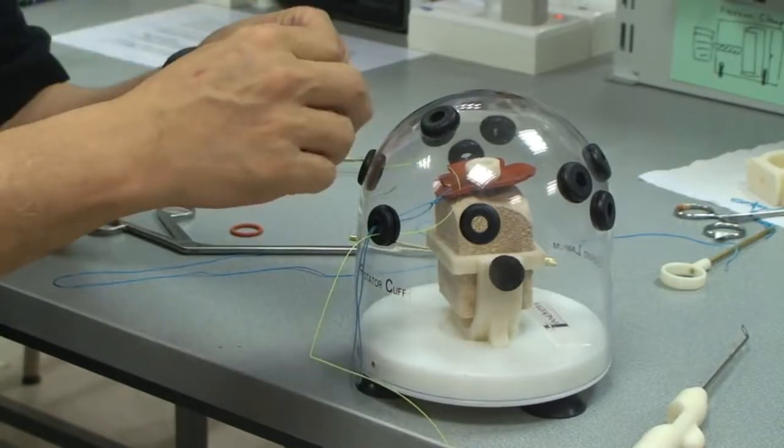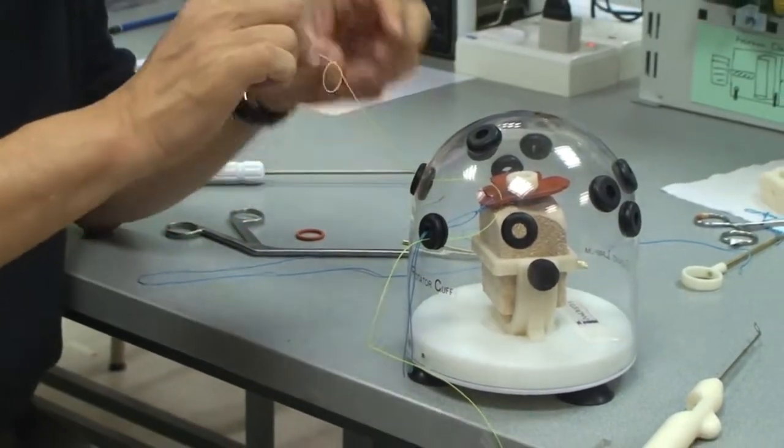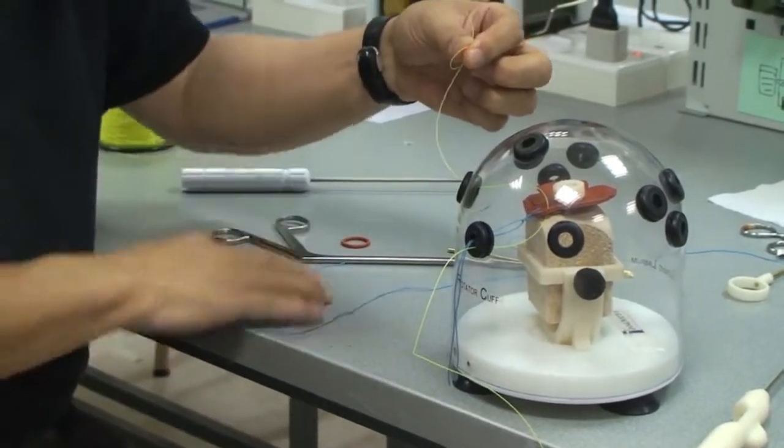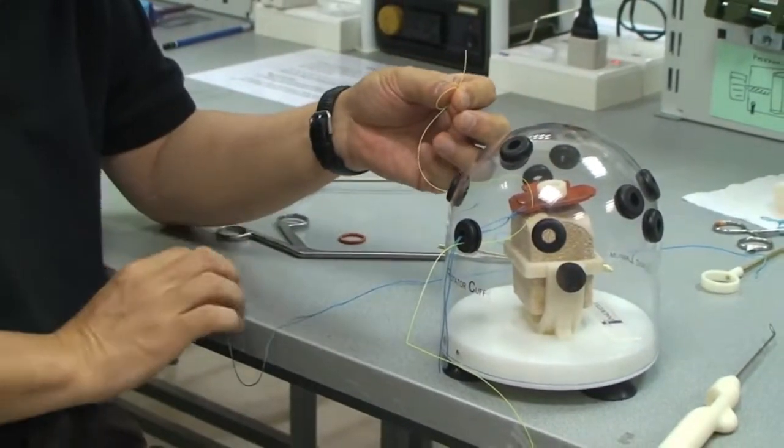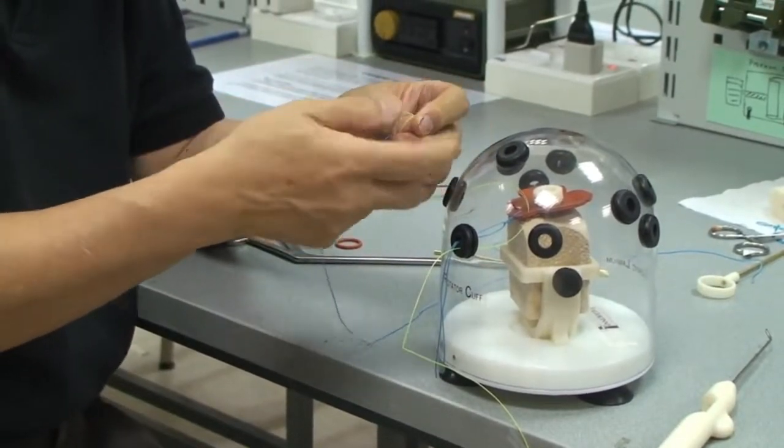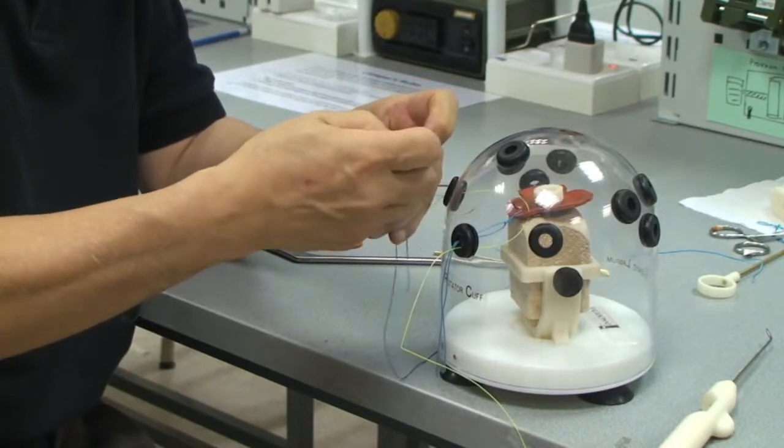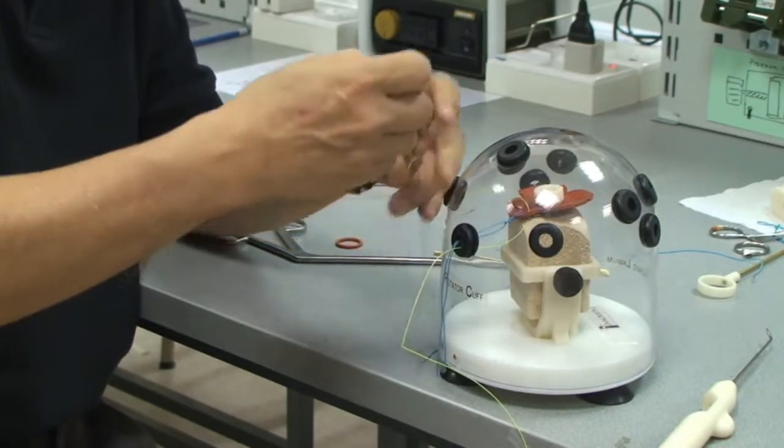This is what I do next. I tie a simple knot. Nothing complicated. Just a loop like that. Then I take one end of the monofilament, I mean the braided suture, through the loop and tighten that.